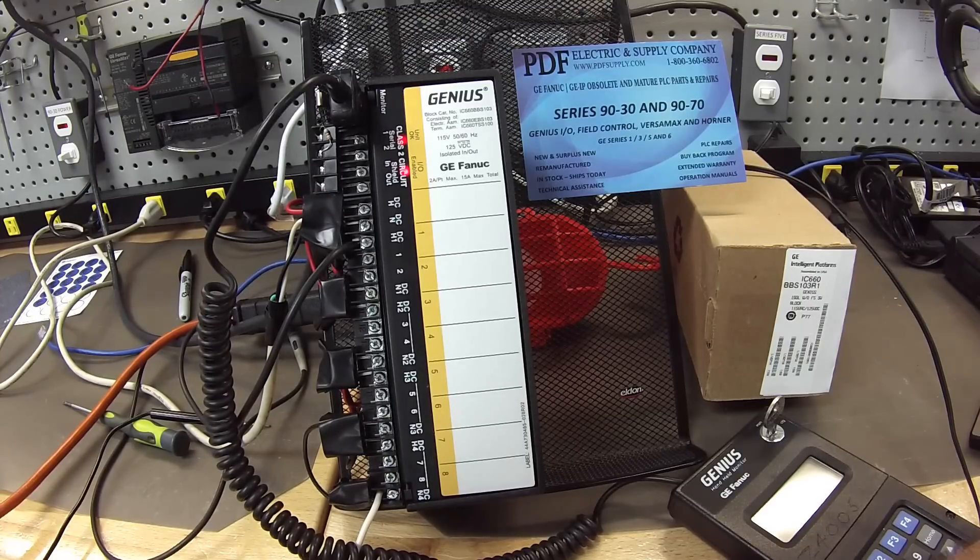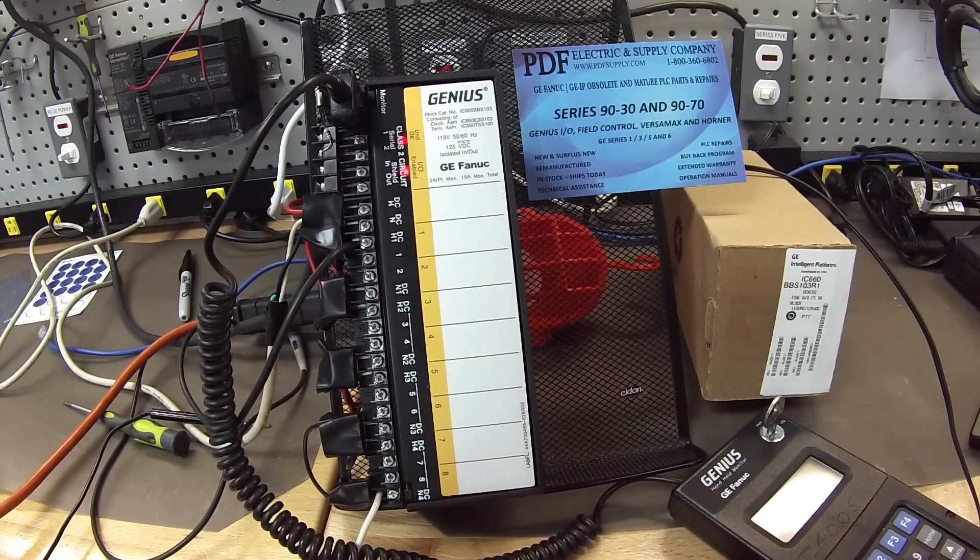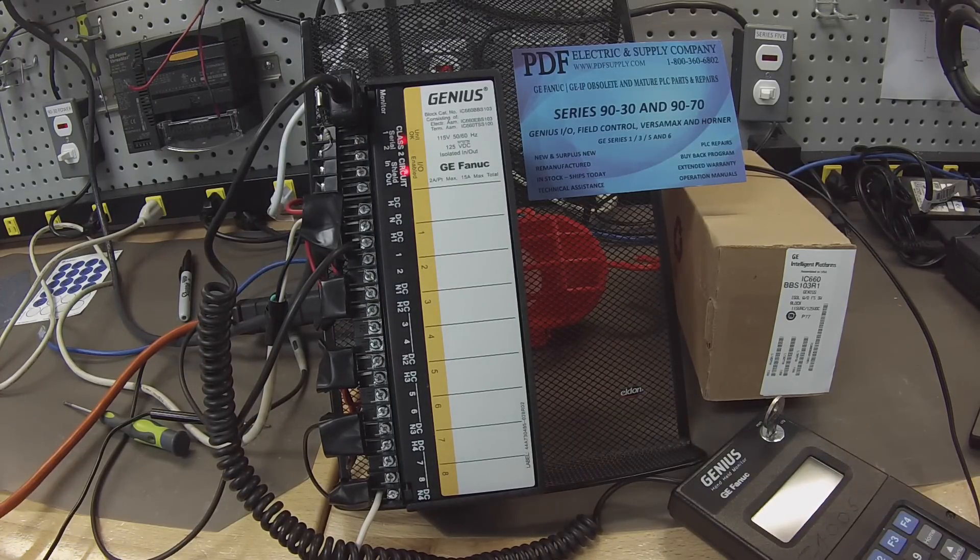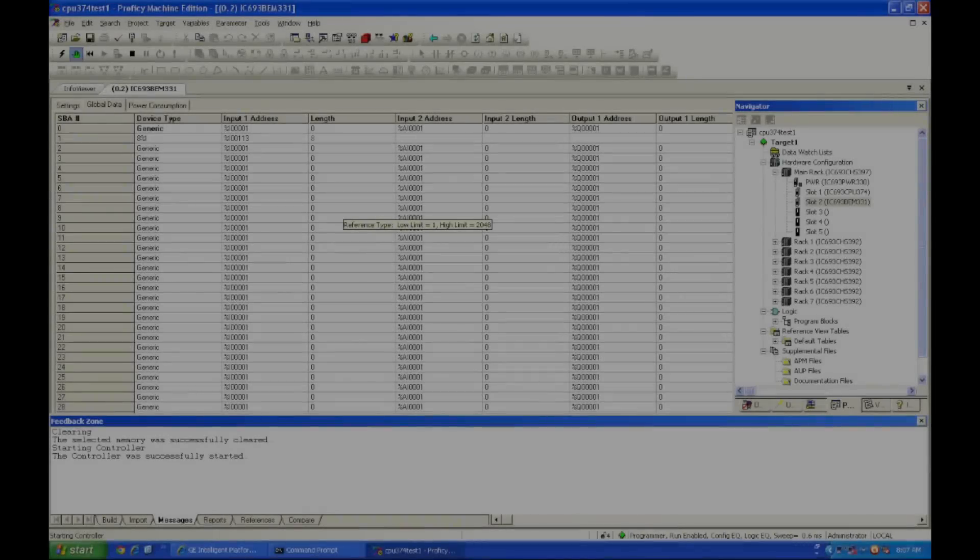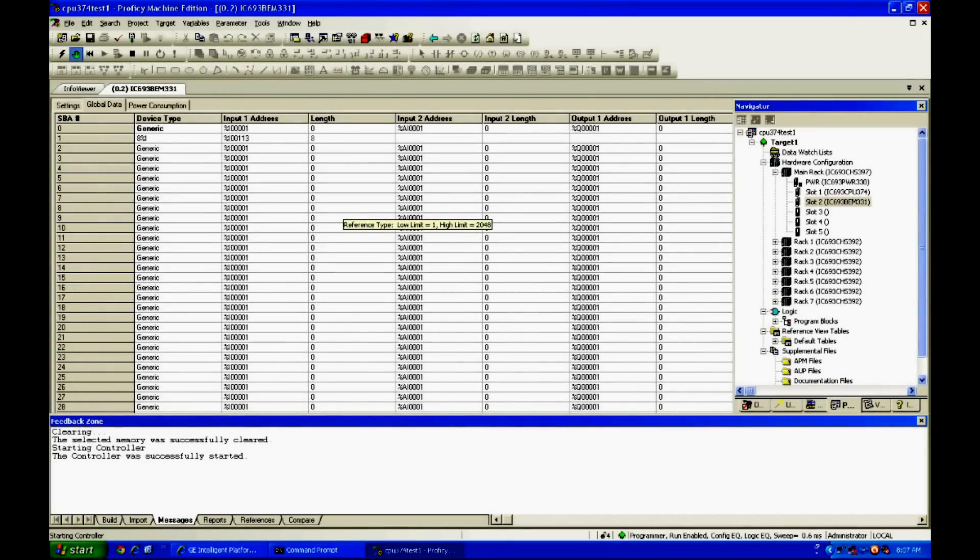The next thing we're going to test is the inputs and outputs and that they're working and how to configure them. Right now I have in Proficy Machine Edition the same information that is stored in this block, which is how my BEM331 is configured.